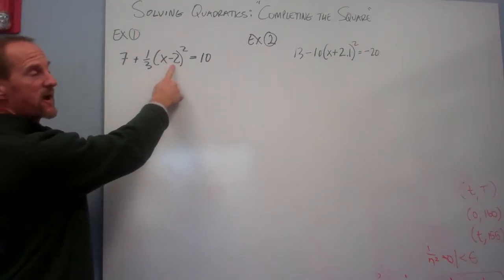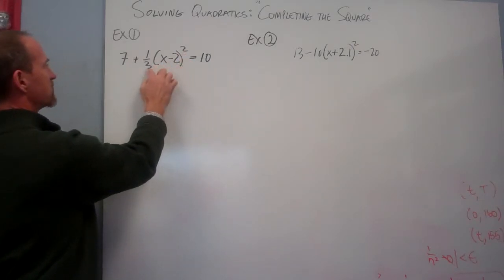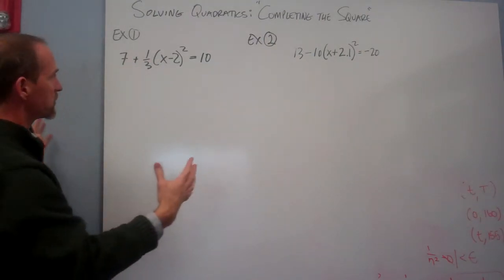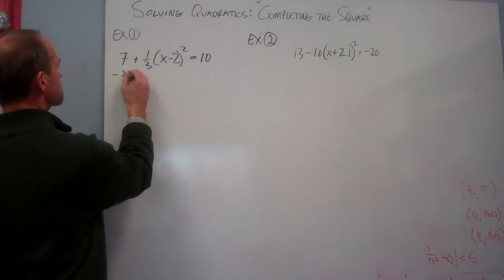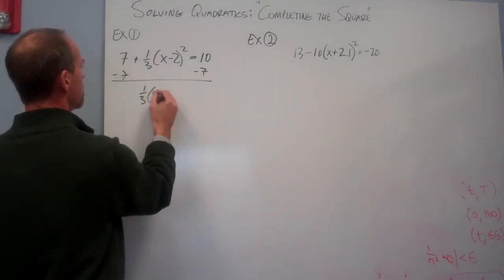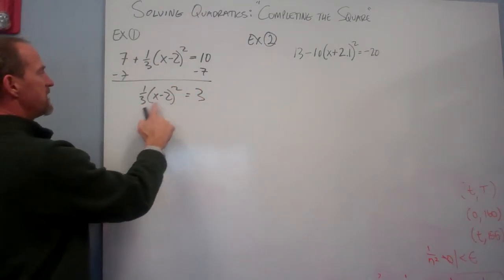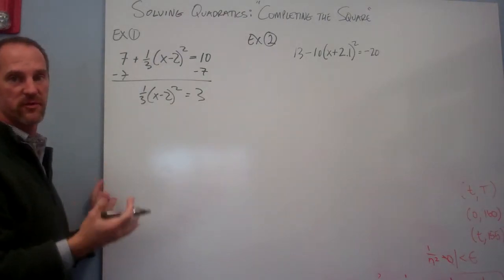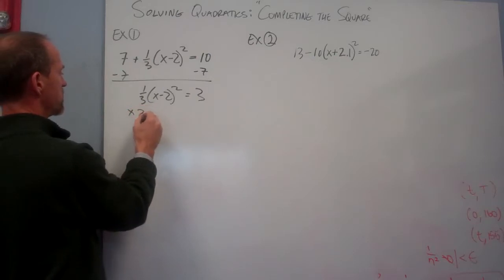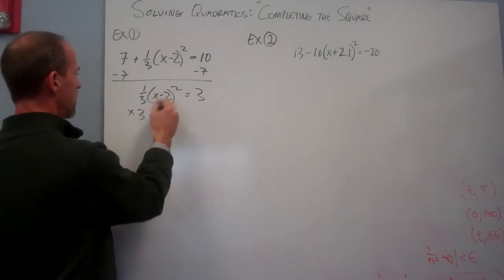Right next to the x is the subtracting the 2. Right next to this parentheses is the square. Right next to that but outside is the 1 third. And the final outermost layer is the 7. So I'm going to work in the reverse by subtracting 7 from both sides. And then I get 1 third x minus 2 squared equals 3. Then I'm going to divide both sides by 3 or multiply by the reciprocal. Multiplying by the reciprocal, this fraction is multiplying by 3. And that makes sense because 3 times 1 third gives me 1.